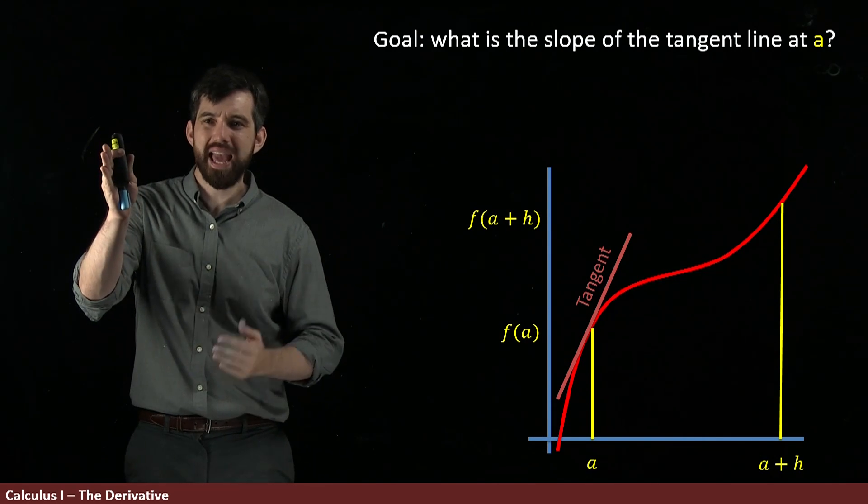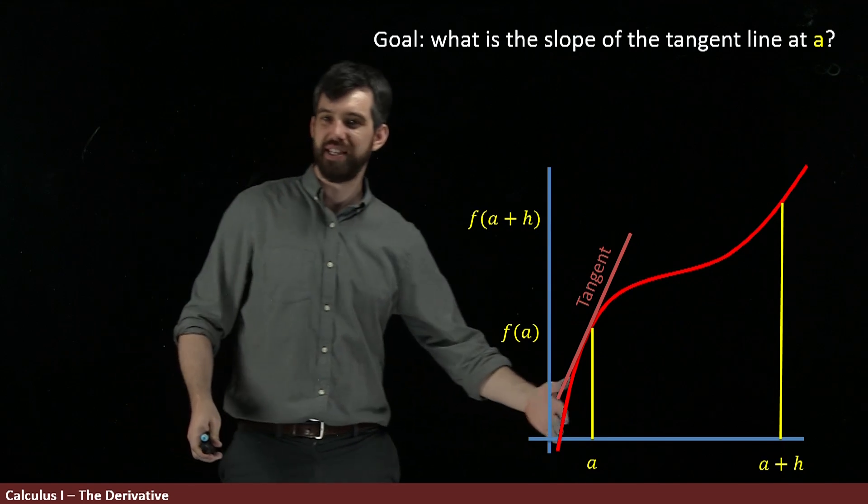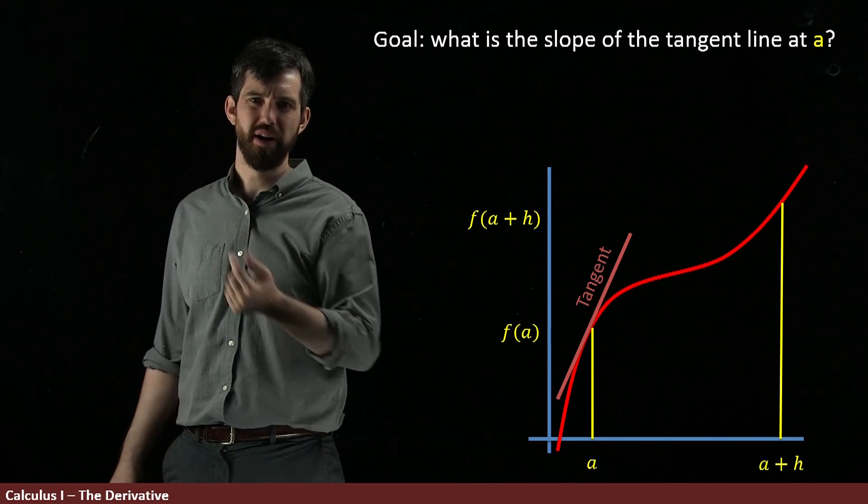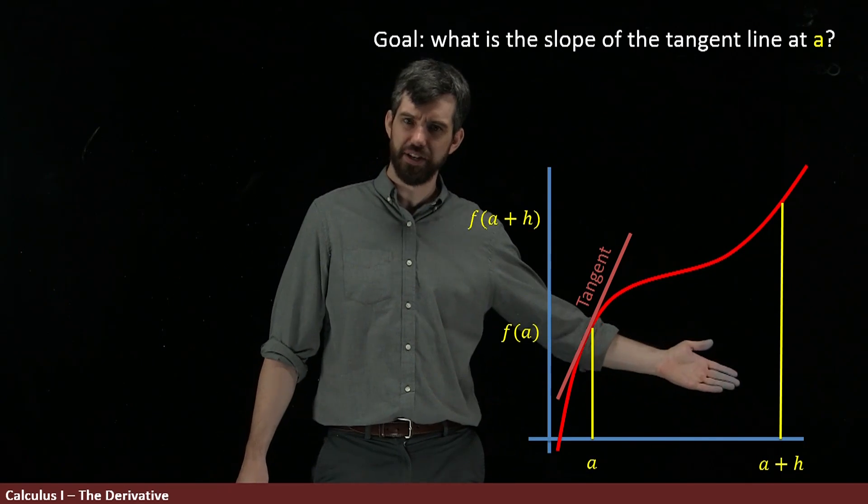So if you've got some point a, a plus h is just a little distance h away. And I've sort of exaggerated it in my diagram, but think of h as this really, really small number. You got a and you got a point right beside a a little bit bigger than it. It's an a plus h.